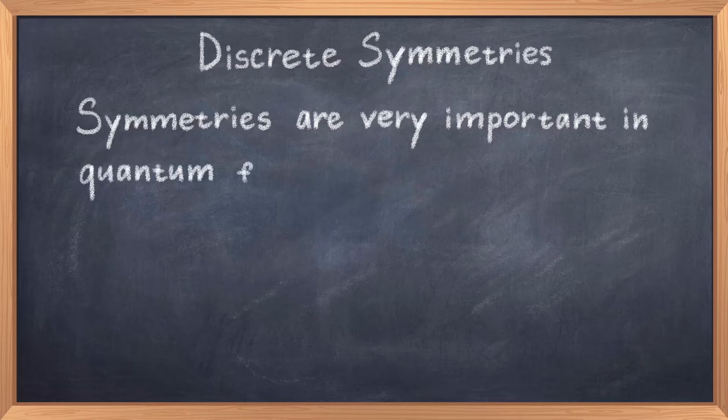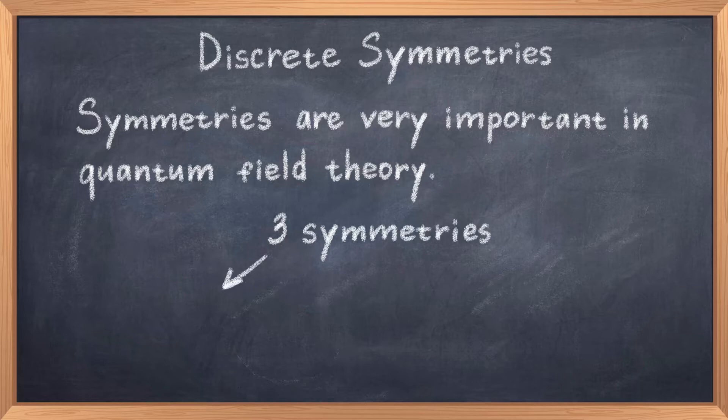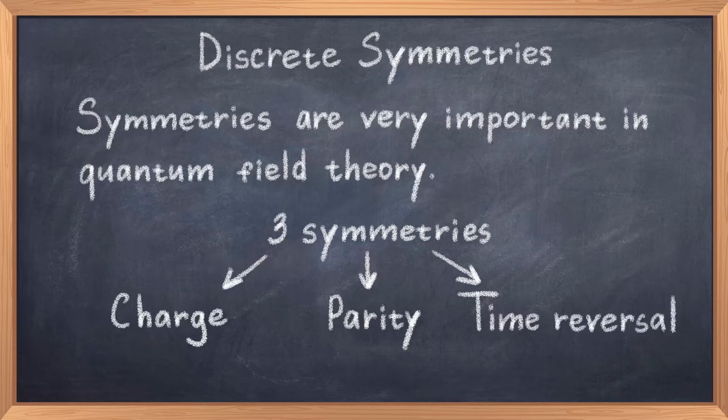So in case you forgot what symmetries are, I will make a quick recap shortly. As it turns out, in relation to the standard model we consider three different discrete symmetries. We call these symmetries charge or C symmetry, parity or P symmetry, and time reversal or T symmetry. As we will see in this video, these symmetries are very important for the standard model.